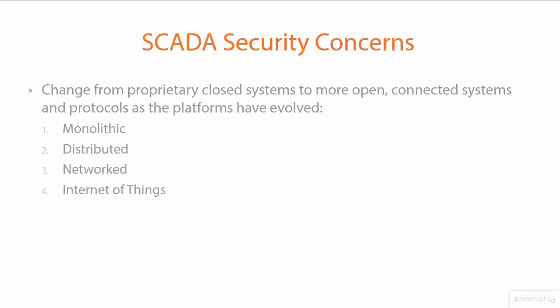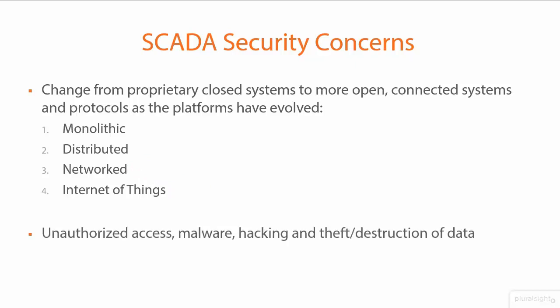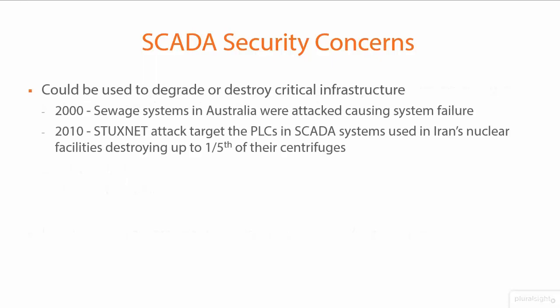When these systems were first invented and brought online, they were very monolithic — not connected to the internet and not designed to be connected to anything else. Security wasn't really baked in as a big concern. Over time they evolved from monolithic to distributed, then networked, then into the Internet of Things with access potentially from anywhere. Security implications and concerns include unauthorized access, malware, viruses, hacking attempts, theft or destruction of data, and backdoors planted for later use.